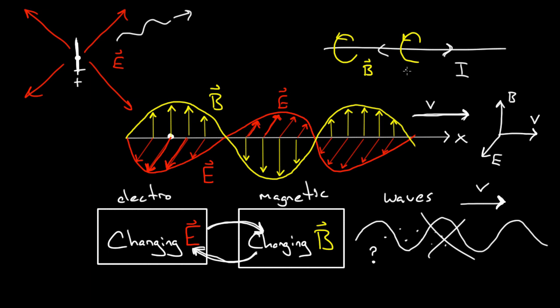The speed at which these waves travel is the speed of light, c — which is three times ten to the eighth meters per second. This is because light is just an electromagnetic wave. Light is one particular special example of electromagnetic waves, but it is only one example.